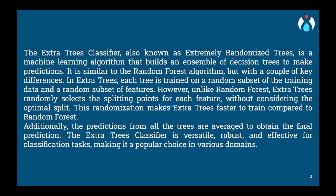Similar to Random Forest, it randomly selects a subset of features at each node but it goes a step further. In Extra Trees Classifier, the decision tree is constructed using random splits on the feature without considering the optimal split point. This means splitting thresholds are chosen randomly rather than being determined based on information gain or Gini impurity. This random splitting process makes Extra Trees more computationally efficient than Random Forest because it does not need to evaluate as many potential splits.